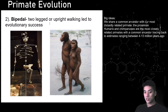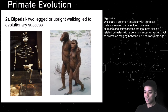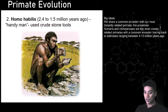Apes and primates also became bipedal, meaning two-legged and walking upright, which leads to evolutionary success. You can move around, become nomadic, hunt, farm, and use tools. This is all based on fossil evidence — by looking at hip structure and spine structure, you can determine that an organism walked upright.